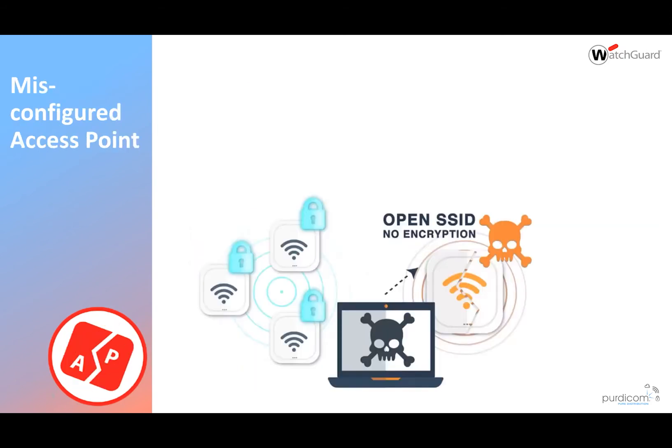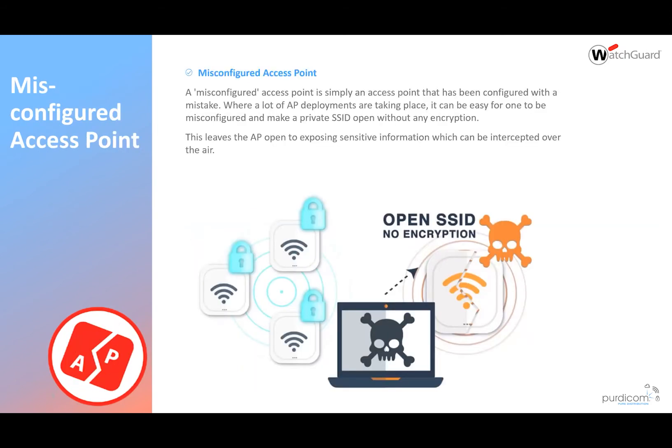The next one is a misconfigured access point. This is also quite common where people have deployed an access point but may not have configured it correctly — either deploying the SSID without any encryption, or not realizing they've left default passwords on there, so any user can come along and try to join or compromise the Wi-Fi.